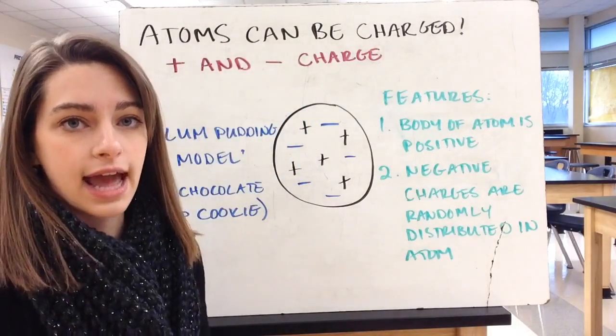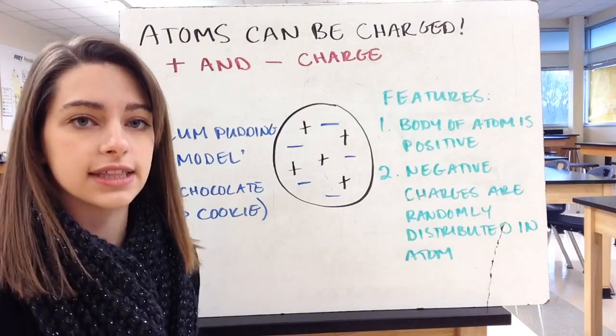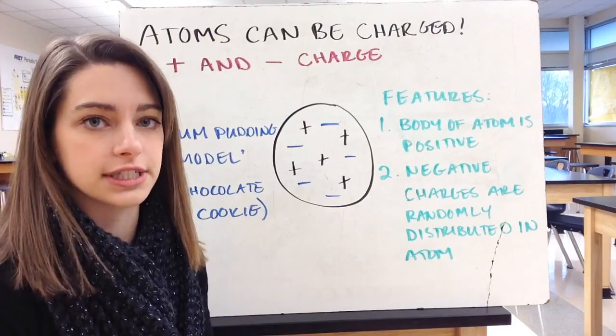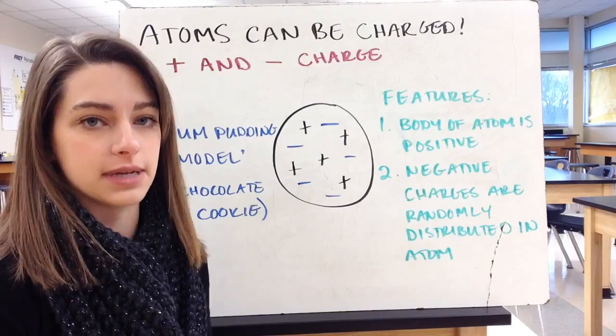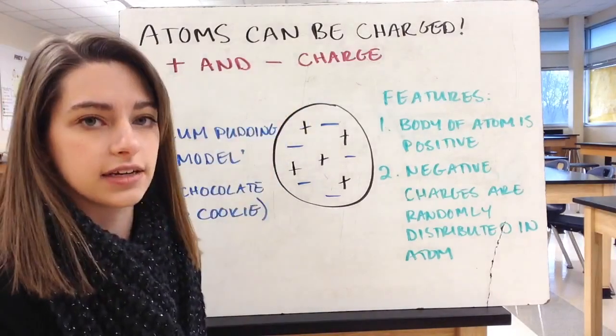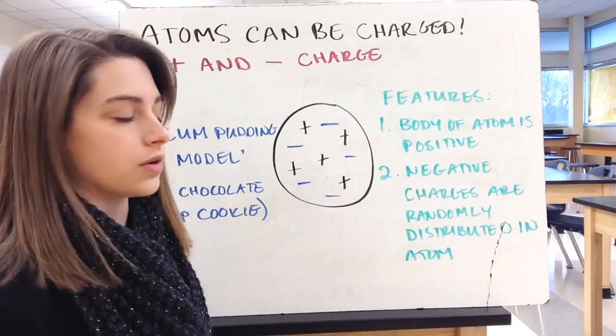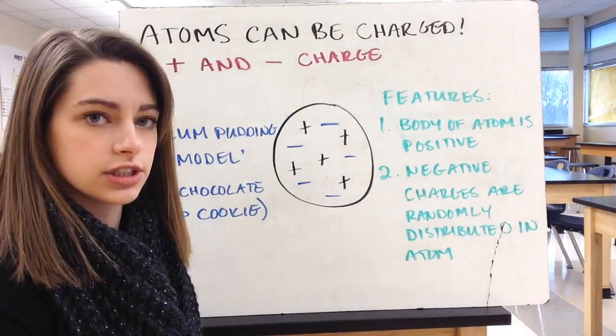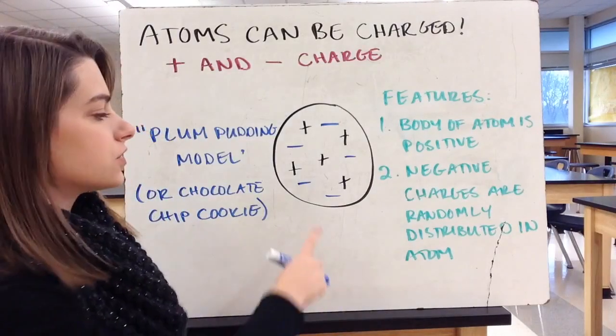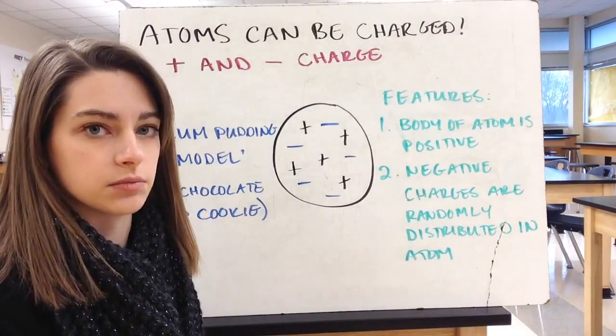That means that atoms have to be able to have charge. Since everything is made up of atoms, in order for something to be negatively charged, the atoms themselves must be negatively charged. So we have both positive and negative charges. If you have one, you have to have the other. So if we conclude that we can have negative charges, they must also be able to have positive charges. So this is what Thompson's model of the atom looks like.